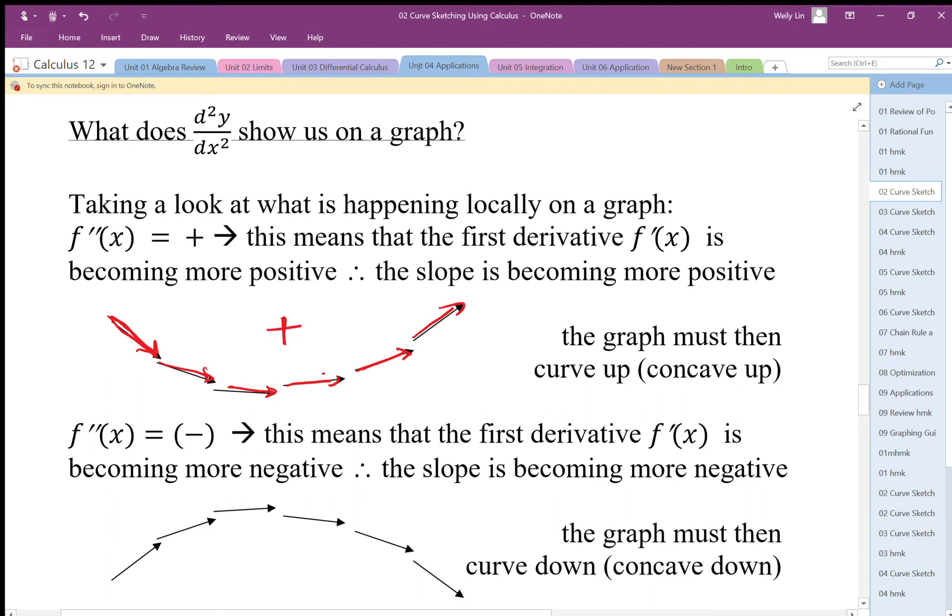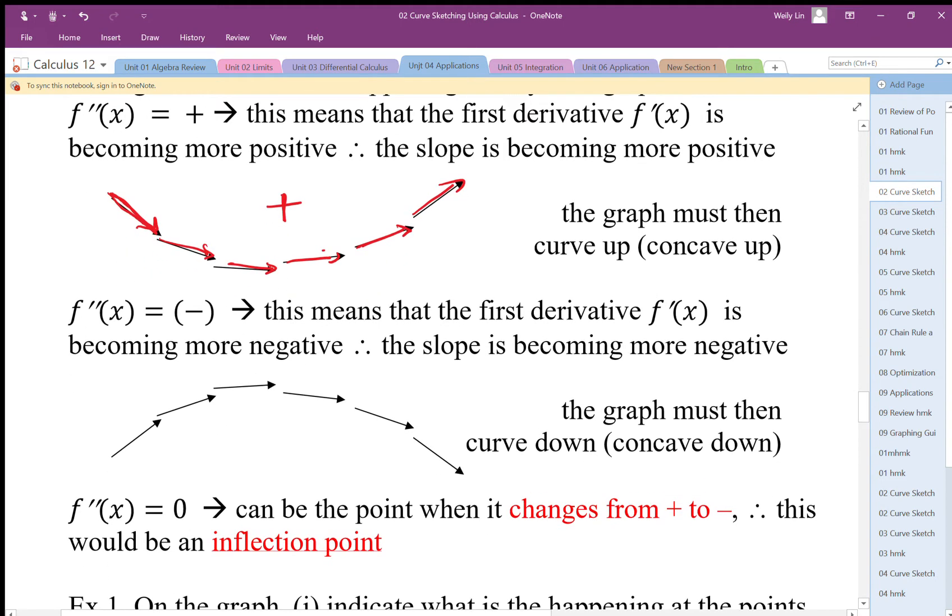The opposite happens if the second derivative is negative. Second derivative negative means that the derivative is decreasing, or the slope is decreasing or becoming more negative.